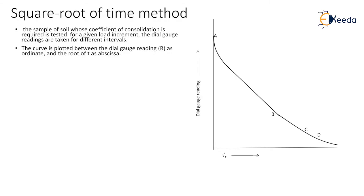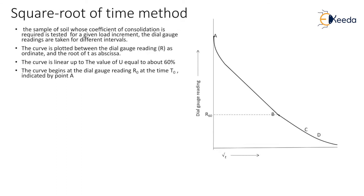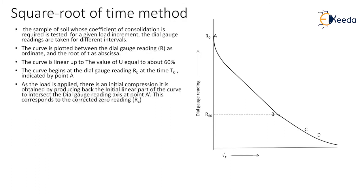The curve is linear up to a value of U equal to about 60%. Point B indicates consolidation of 60%, so the curve is linear up to point B, and the corresponding dial gauge reading is indicated as R60. The curve begins at the dial gauge reading of R0 at time T0, indicated by point A. As the load is applied, there is an initial compression, obtained by producing back the linear part of the curve to intersect the dial gauge reading axis at point A dash.